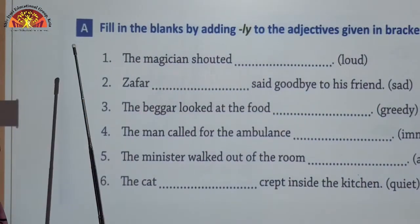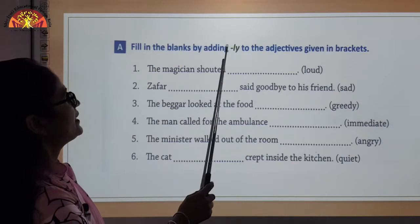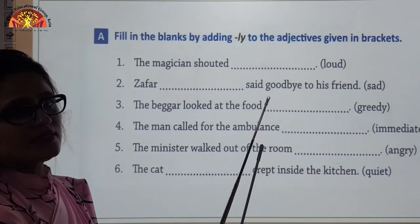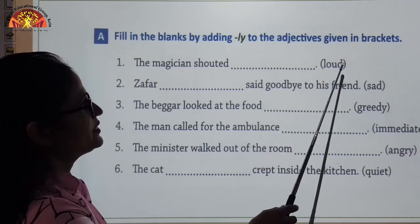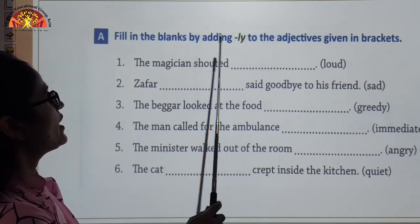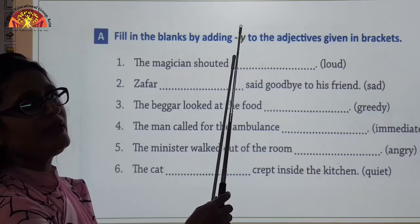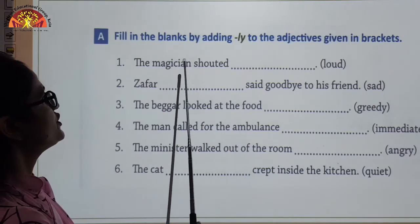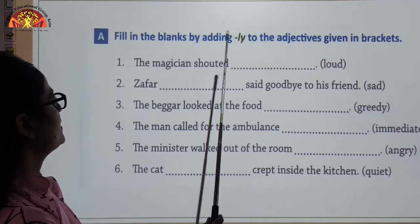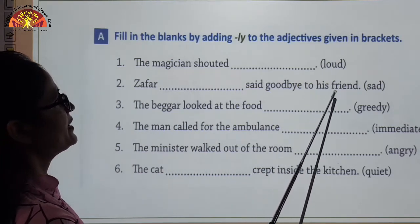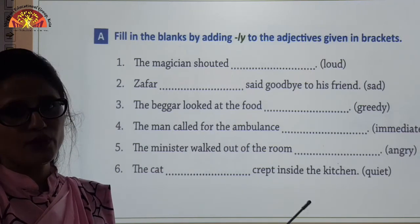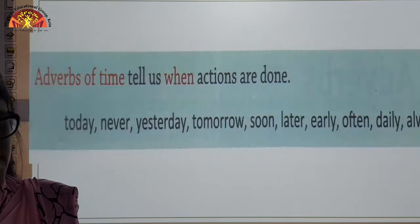Let us see Exercise A: fill in the blanks by adding -ly to the adjectives given in the brackets. You are available with a help box. You have to add -ly and fill the blank. For example: the magician shouted loud — the answer will be loudly. Zafar said goodbye to his friend sad — the answer will be sadly. Rest of the sentences you have to do on your own.